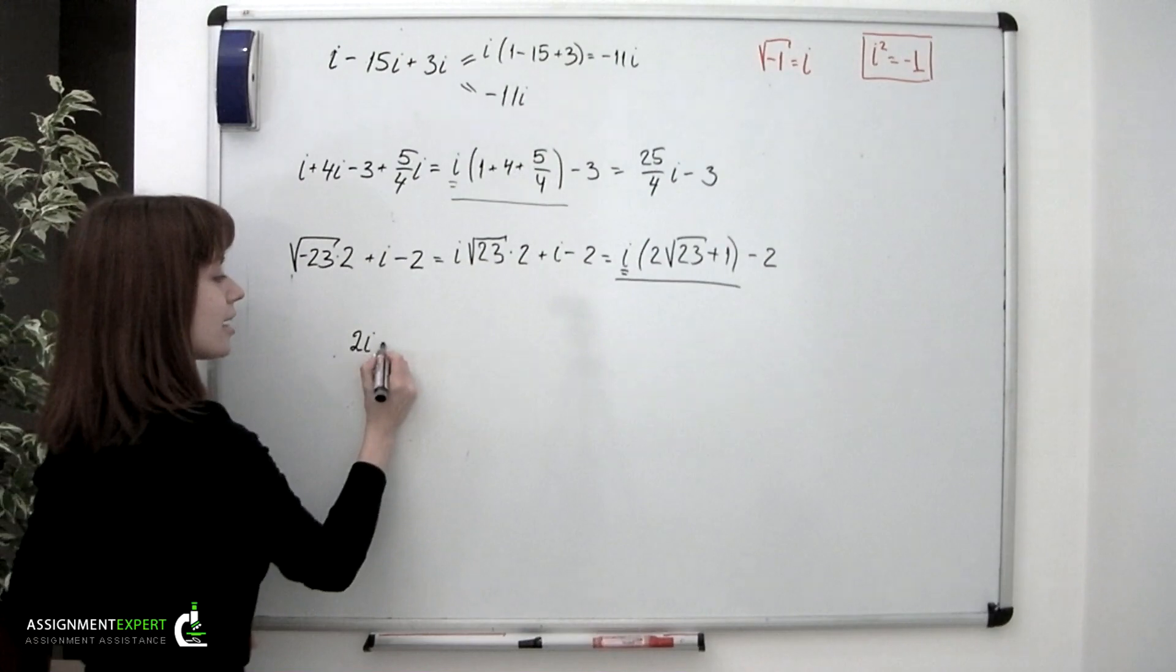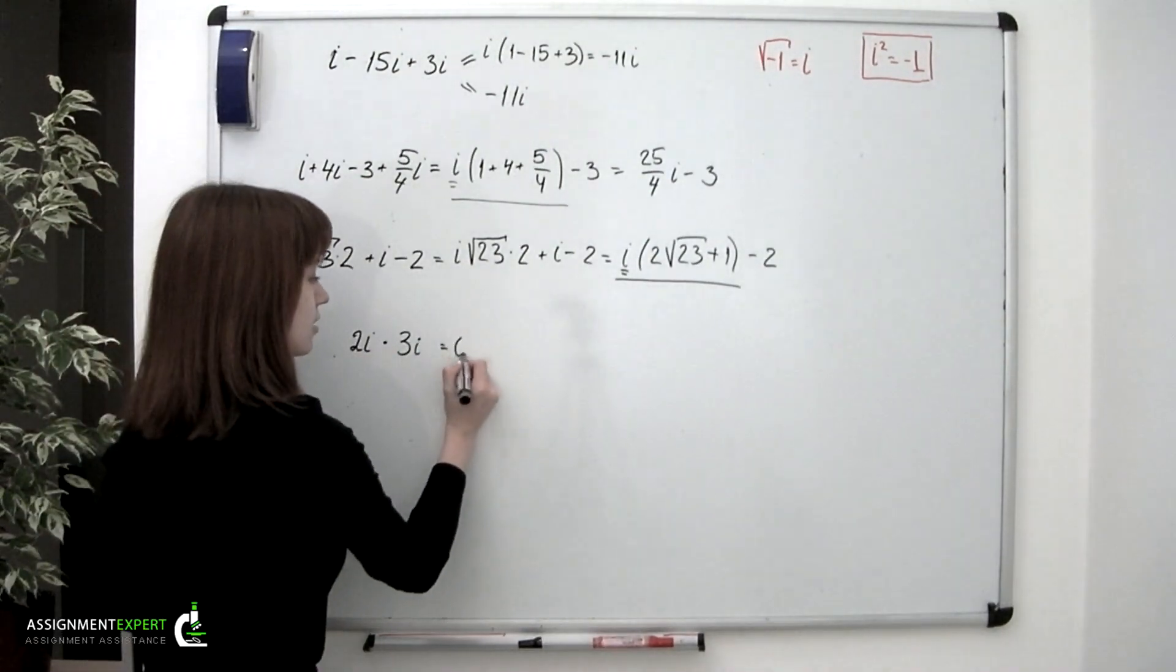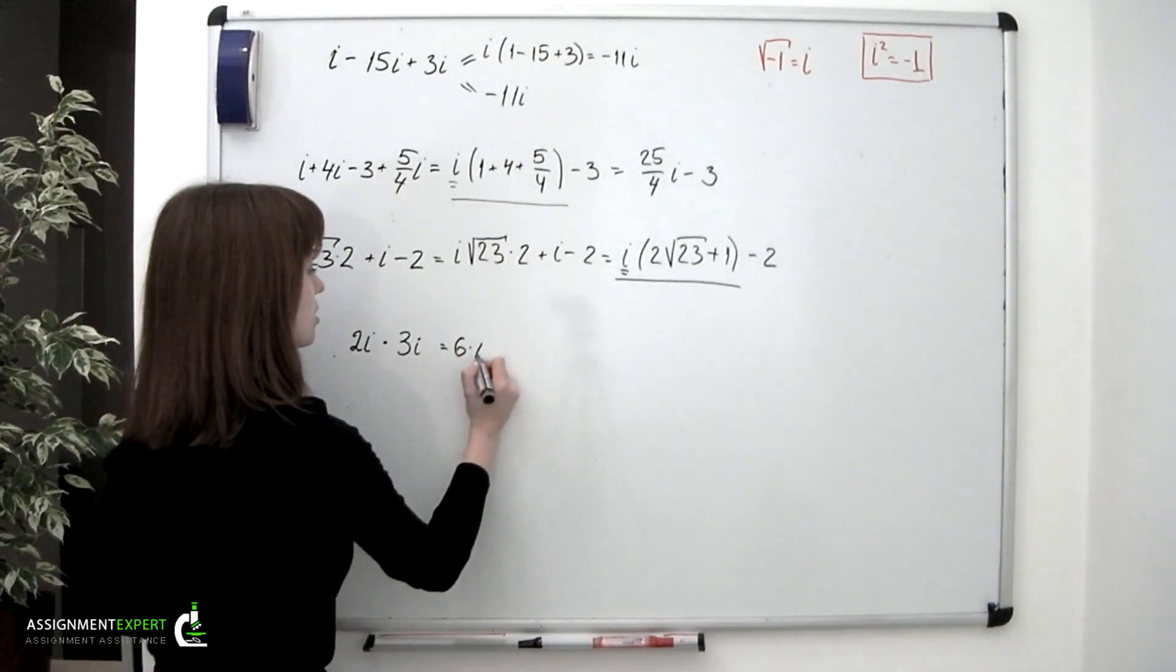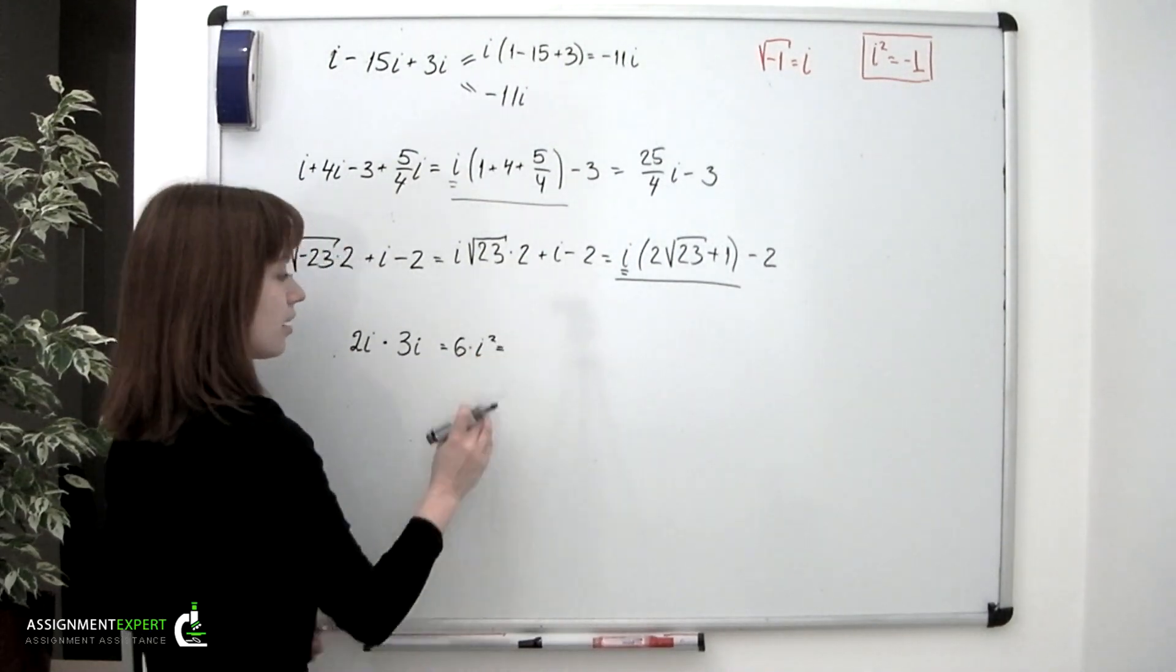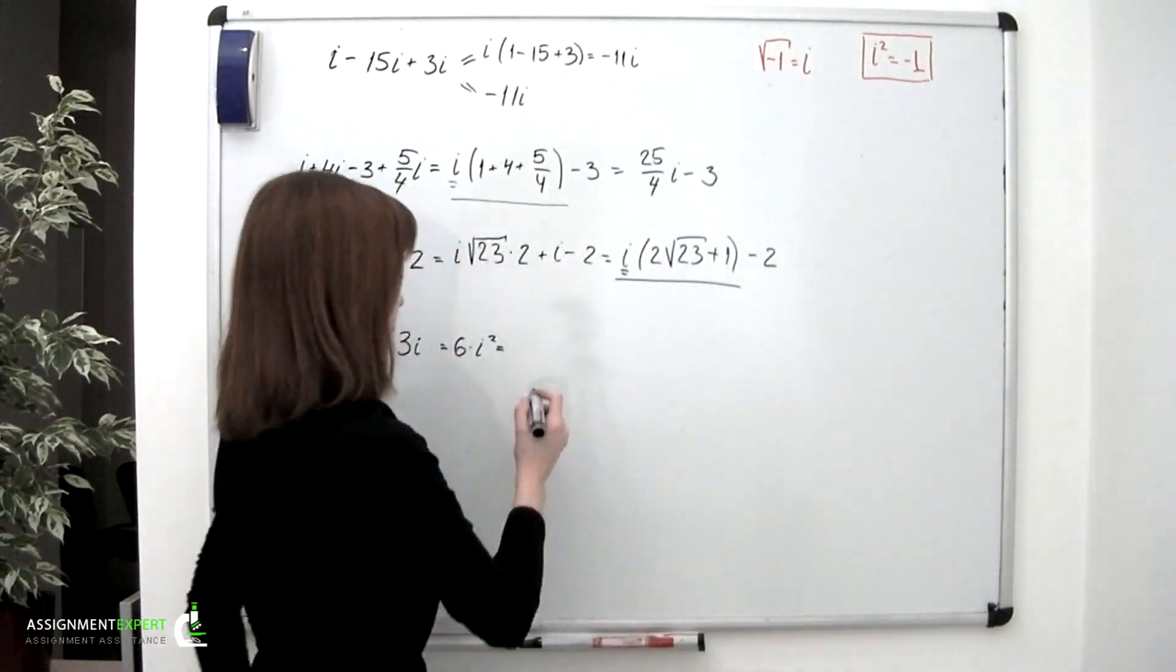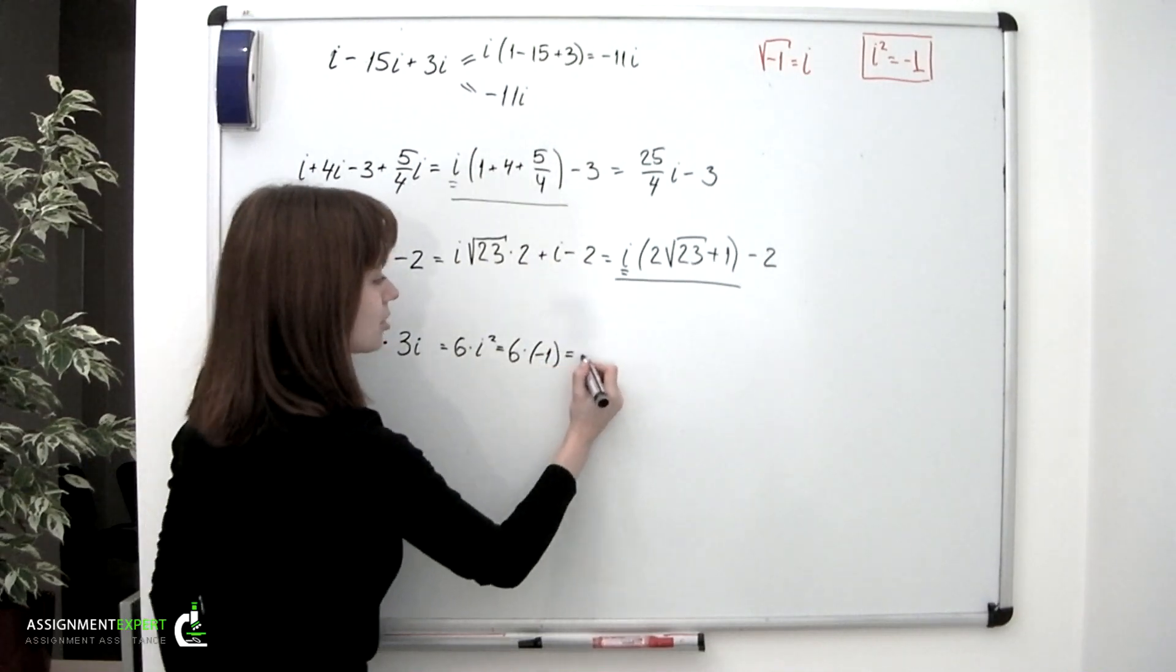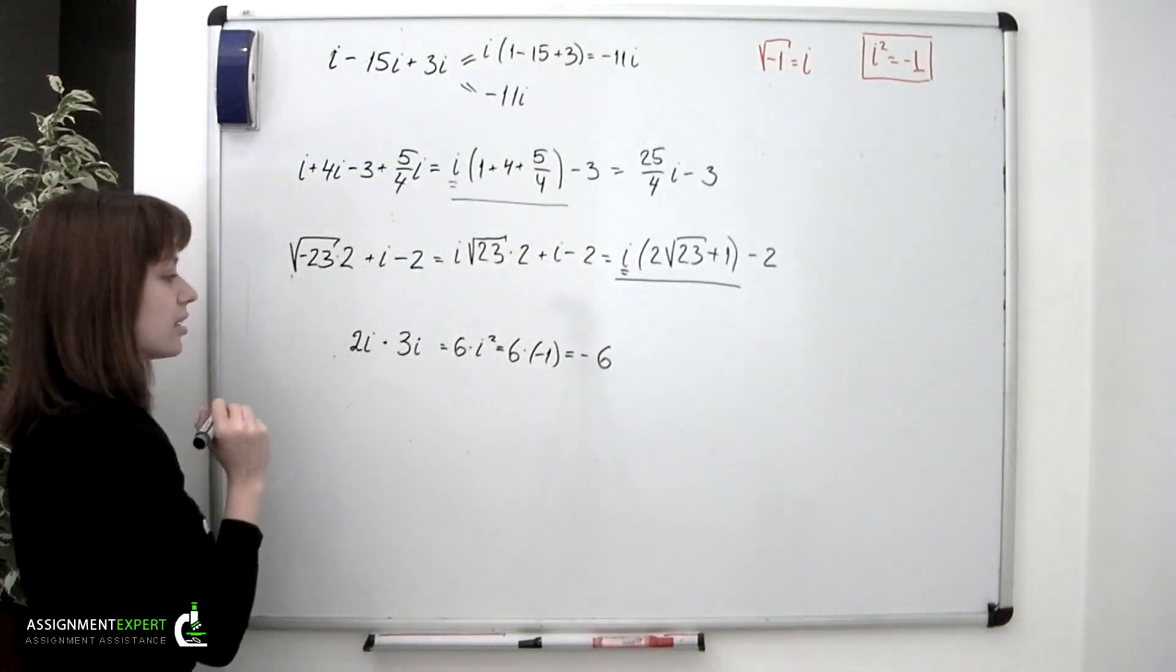Suppose we want to multiply two imaginary numbers, say 2i and 3i. So we'll have 6 multiplied by i², and that as we know equals -1. So we'll have 6 × (-1), which equals -6.